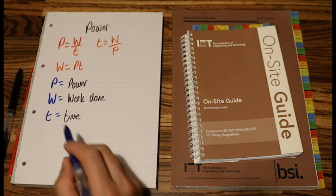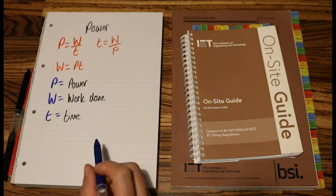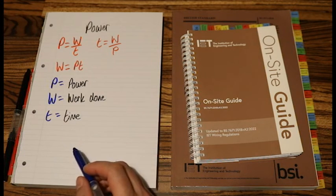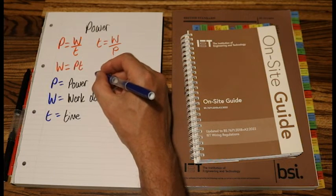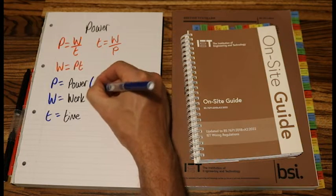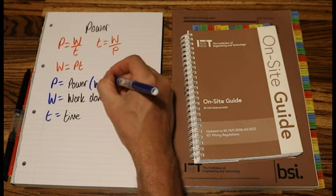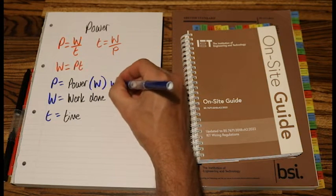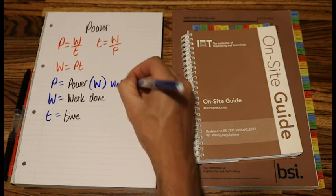Now let's write down the SI unit for each of these. So power is measured in watts, a capital W, watts.